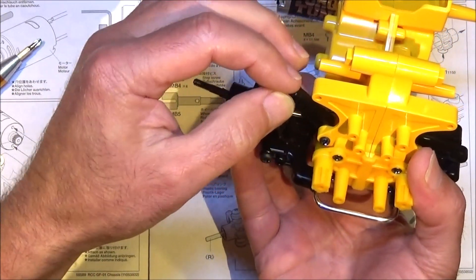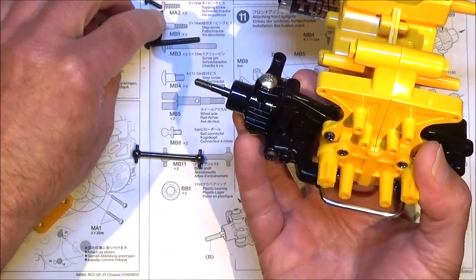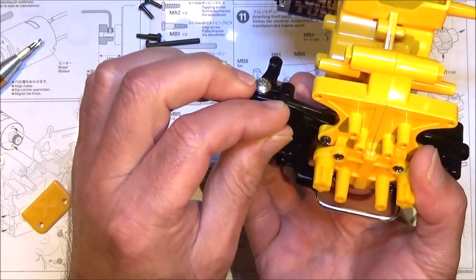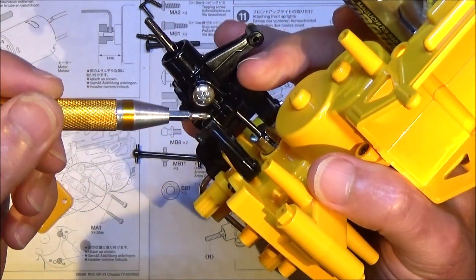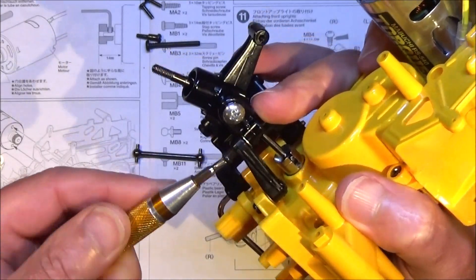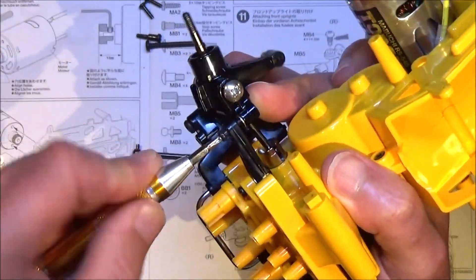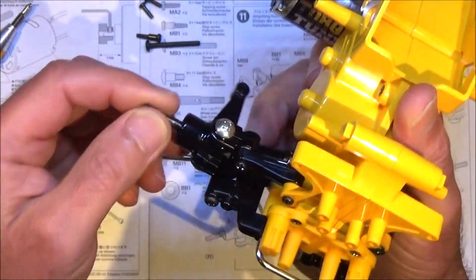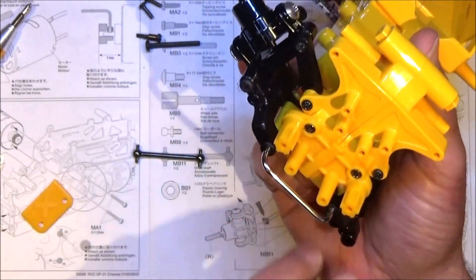Then it's just a case of getting the top arm on and that's with another step screw. Again, if you can get another 3mm washer in there in between the top arm and the upright, then all the better.